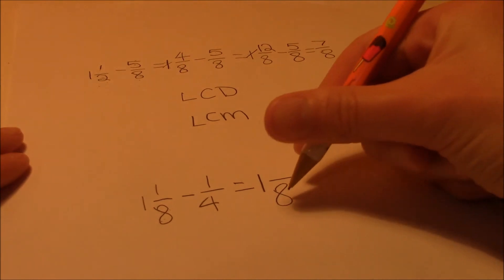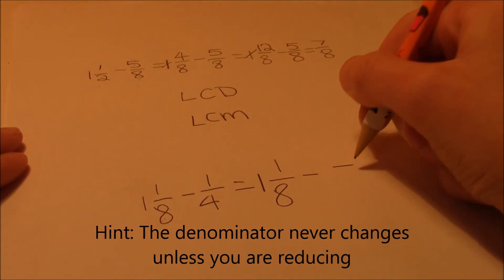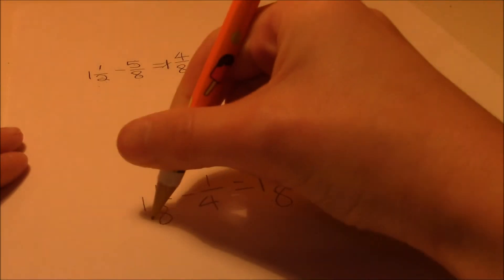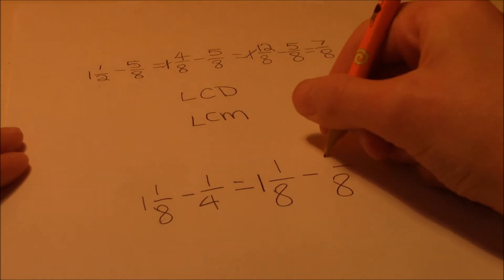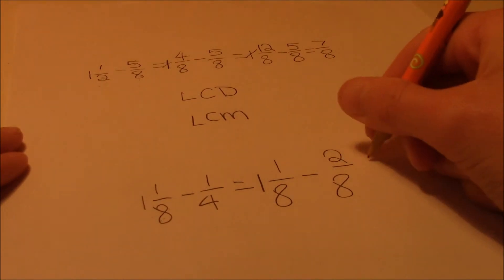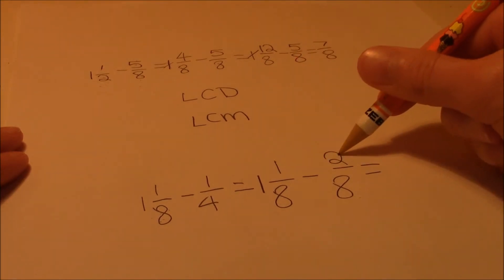8 goes into 8 one time, minus what the denominator is. And 4 goes into 8 two times, so we write 2 on top of here. Which equals, oh wait, 1 is bigger than, I mean 1 is smaller than 2.